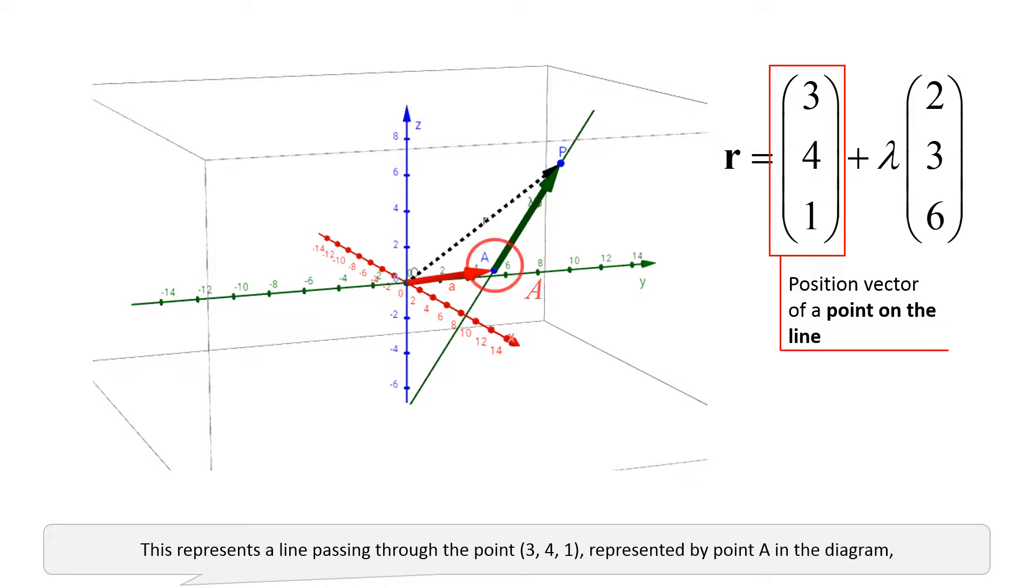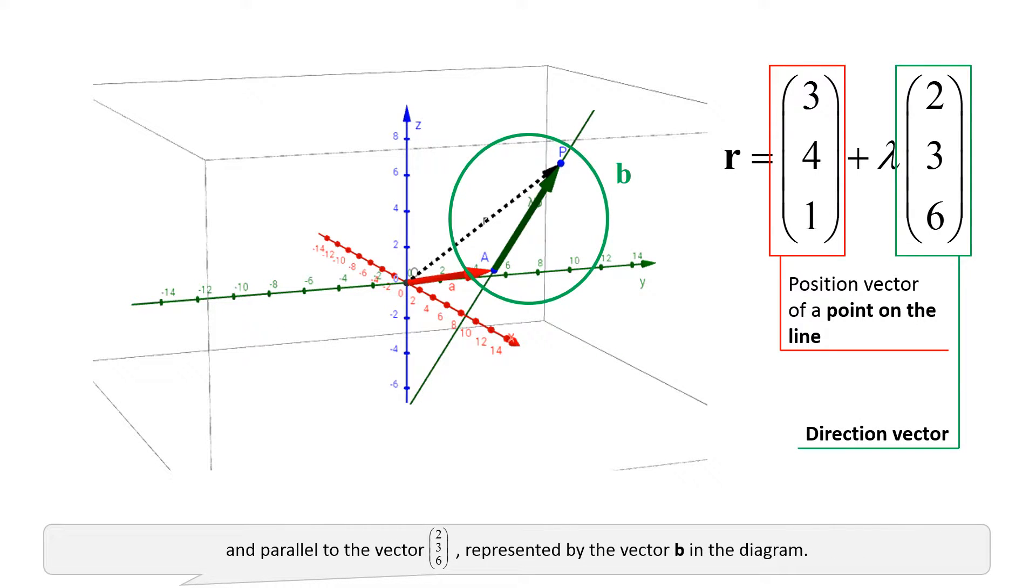This represents a line passing through the point 3, 4, 1, represented by point A in the diagram, and parallel to the vector 2, 3, 6, represented by the vector B in the diagram.